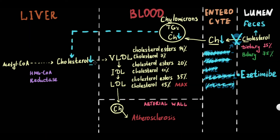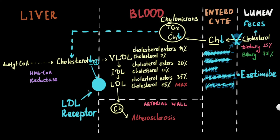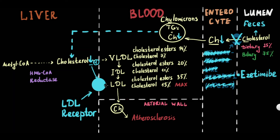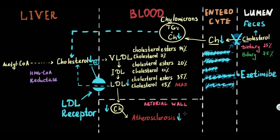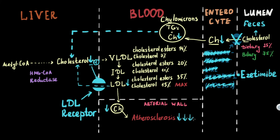When the cholesterol level in the hepatocyte decreases, it causes activation of low-density lipoprotein receptor transcription on the hepatocyte. This leads to increased clearance of low-density lipoproteins from the blood, thereby decreasing intra-arterial cholesterol accumulation and preventing atherosclerosis development.